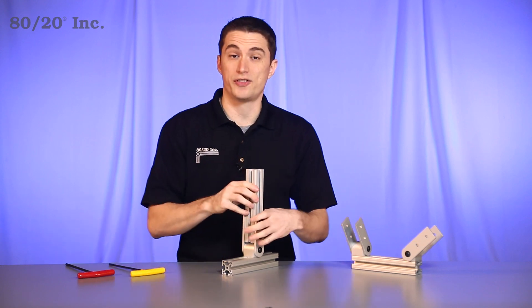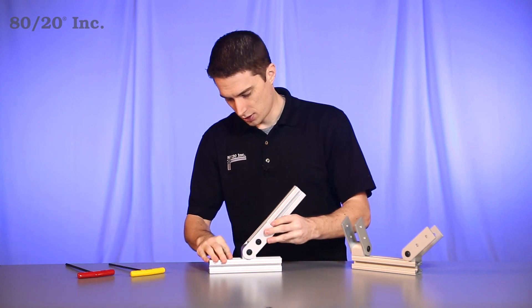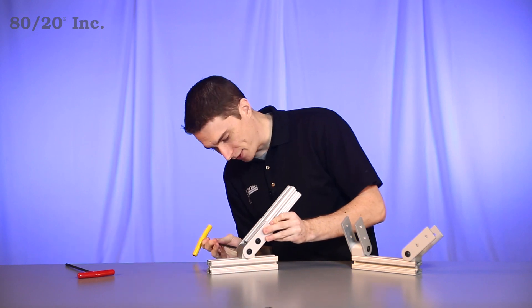Now the last thing we want to do is find the angle that we want our bar at. Once we've found that, we'll tighten down the pivot bolts.